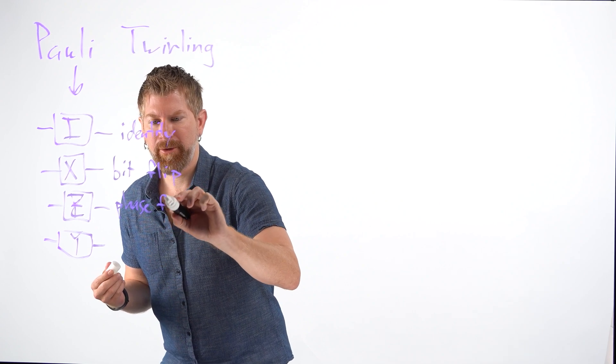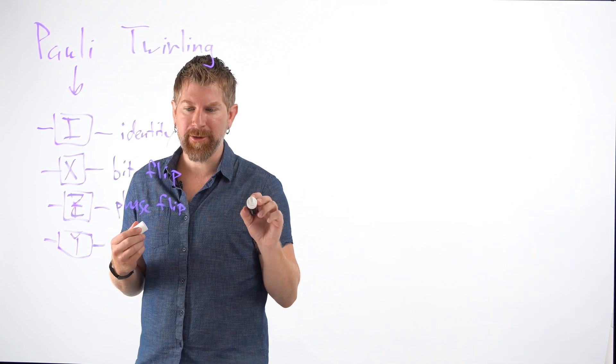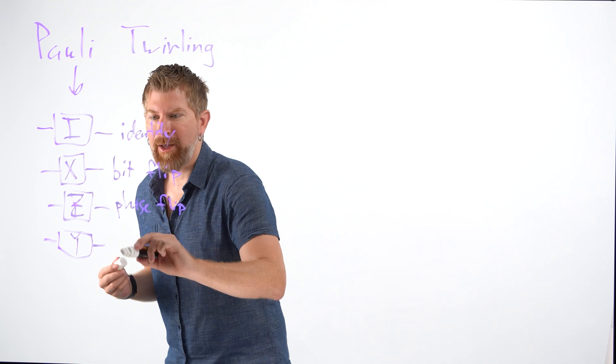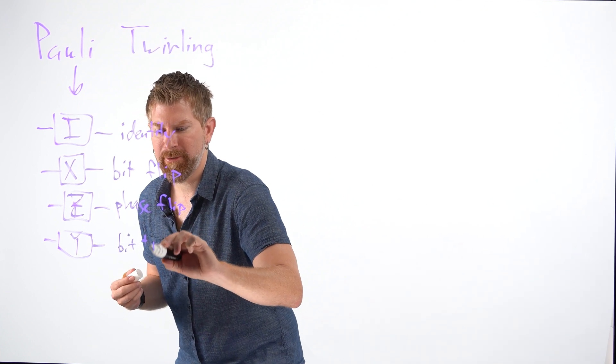The Z is a phase flip, which will change a plus state to a minus state and a minus state to a plus state. And the Y gate is a bit flip plus a phase flip.